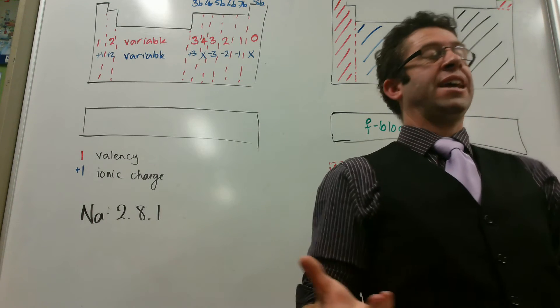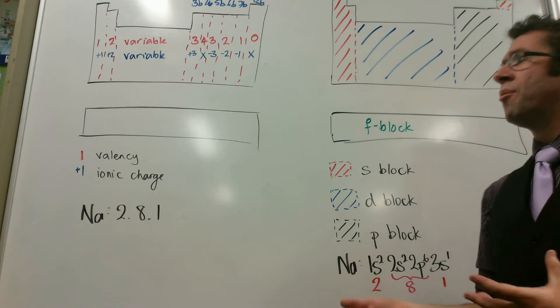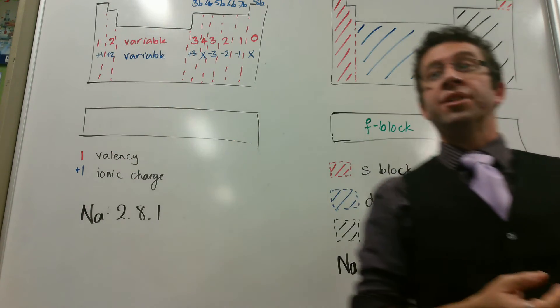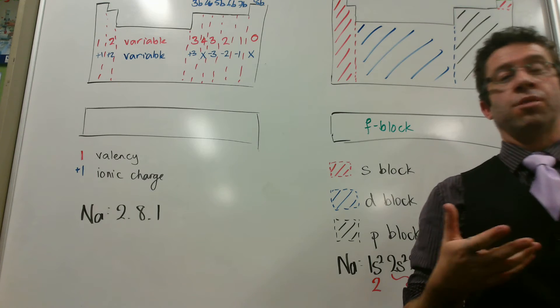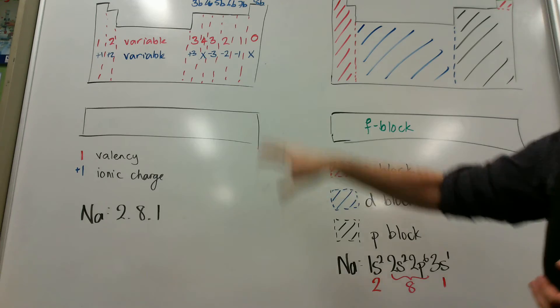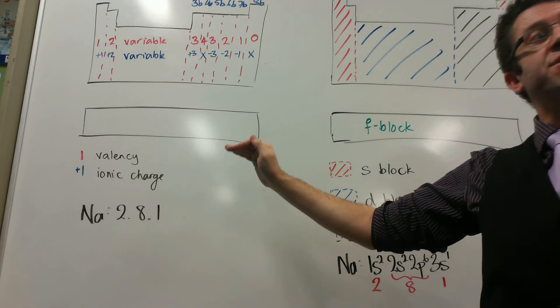But zinc's in there, but it only has a 2 plus, yet it makes things called complex ions. So the Bohr model, it conveniently ignored these by stopping at number 20. We stopped at calcium because the Bohr model stopped working for us.